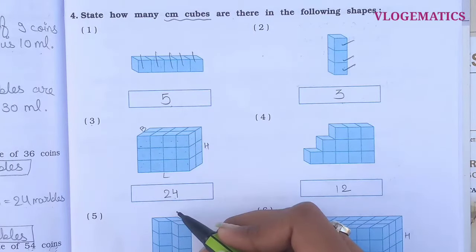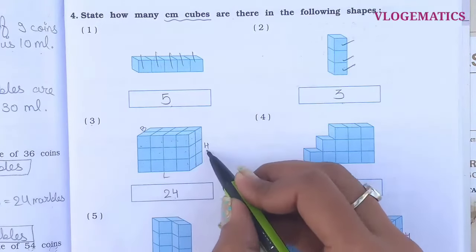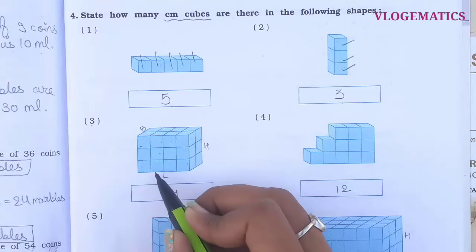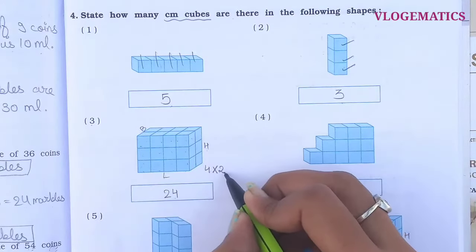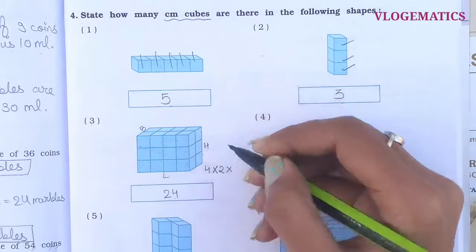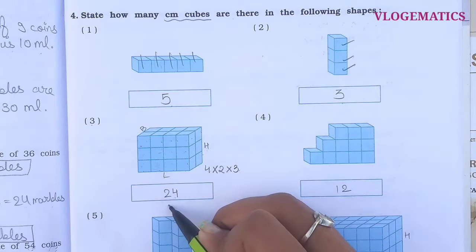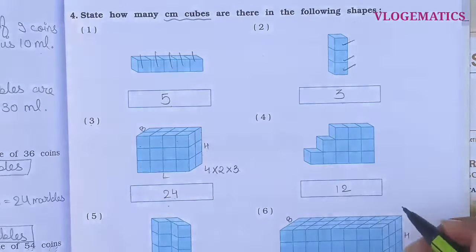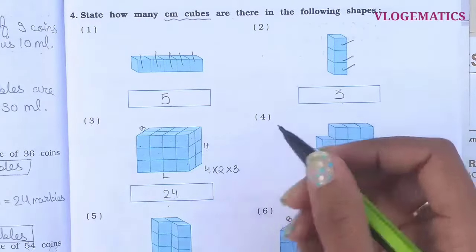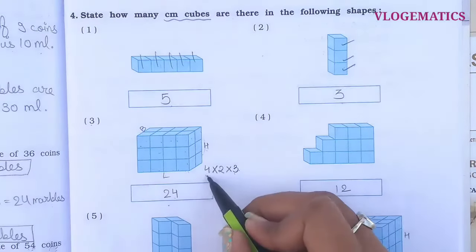Now let's find the cm cubes another way — using the volume formula with length, breadth, and height. For shape 3: length is 4, breadth is 2, height is 3 cm. So 4 × 2 = 8, and 8 × 3 = 24. We can find the cm cubes using either method — counting individually or applying the formula — whichever you find easy. We used this formula because it was a cuboid.